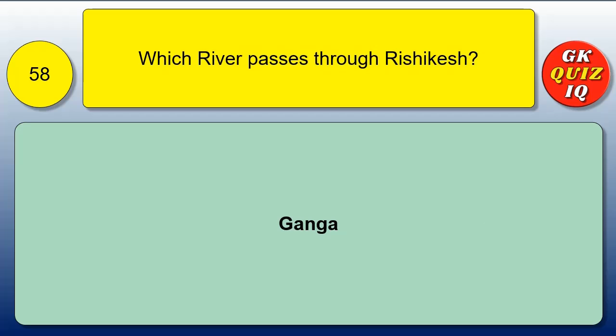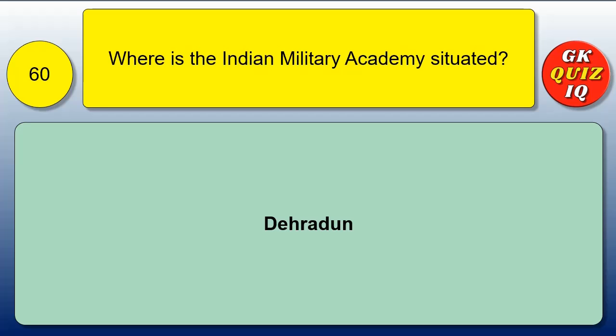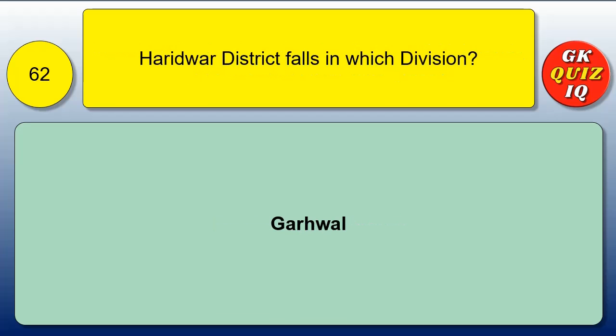Which river passes through Rishikesh? Ganga. Where does the Kumbh Mela take place in Uttarakhand? Haridwar. Where is the Indian Military Academy situated? Dehradun. In which district does the confluence of Alakananda and Mandakini rivers take place? Rudra Prayag district. Haridwar district falls in which division? Garhwal.